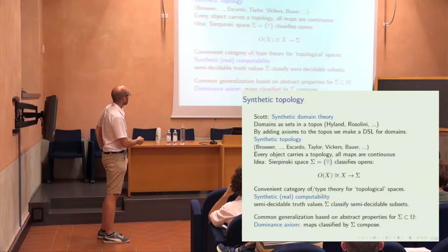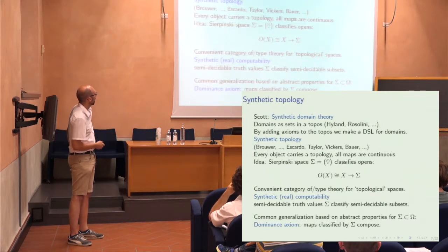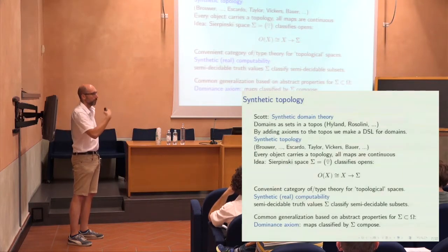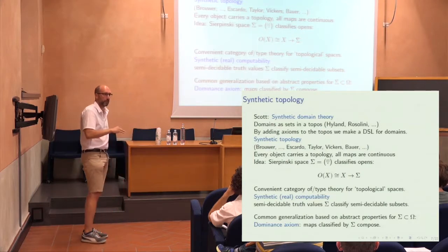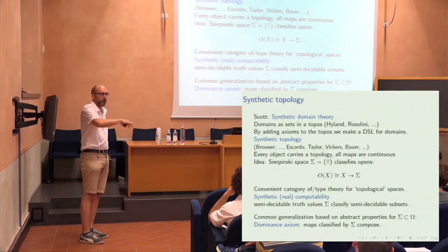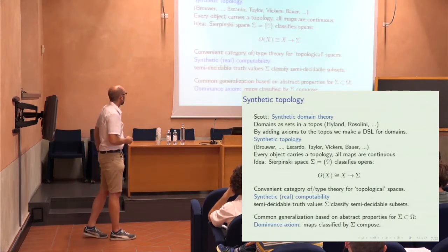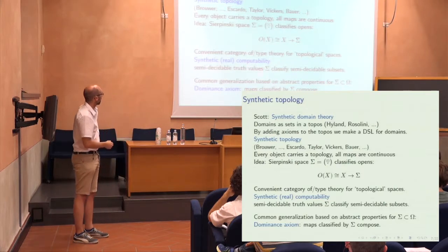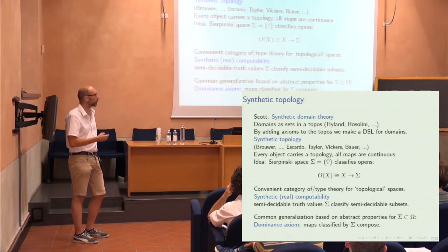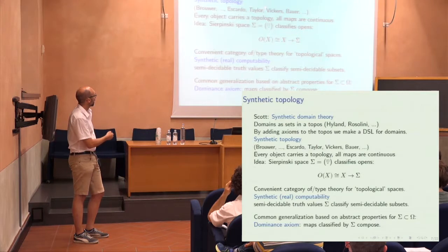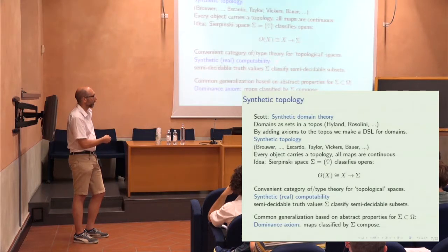The idea is to take a convenient category or convenient type theory of topological spaces, connected to virtual topological spaces mentioned before. One way of obtaining this is to take topological spaces and embed them into a topos so you have a virtual extension. Another possibility involves computability theory: synthetic computability where you have real number computations can be captured nicely, and instead of looking at the Sierpinski space, you take the semi-decidable truth values.